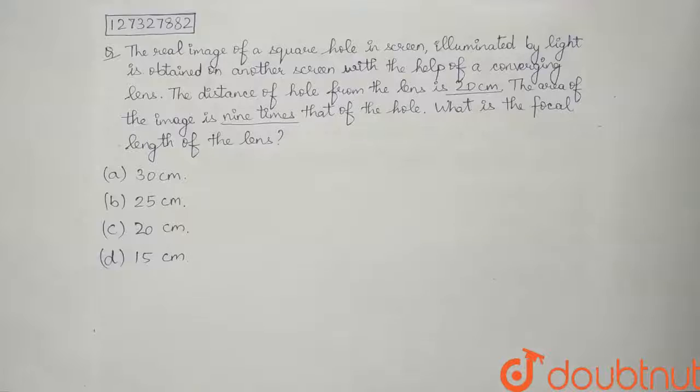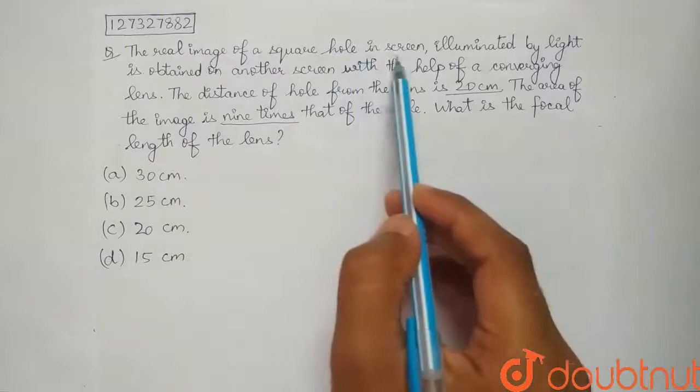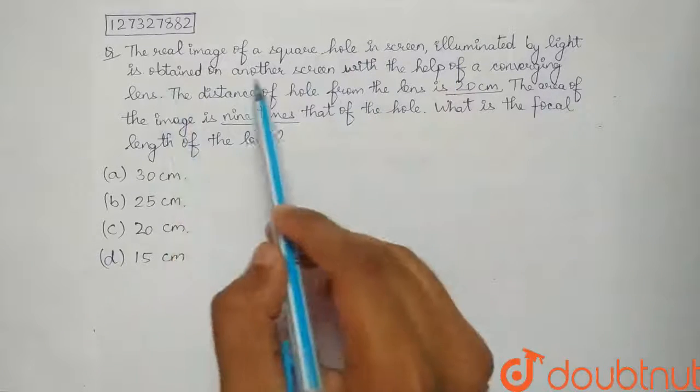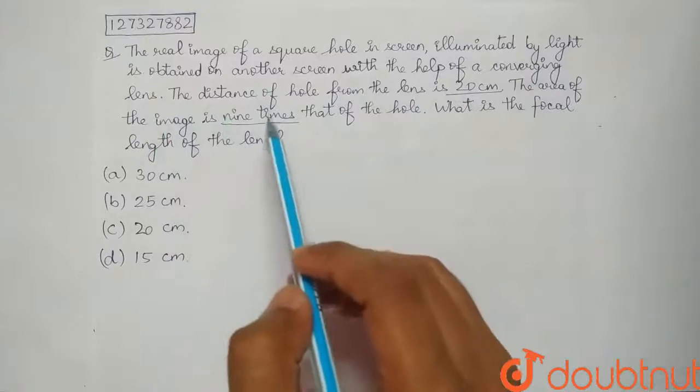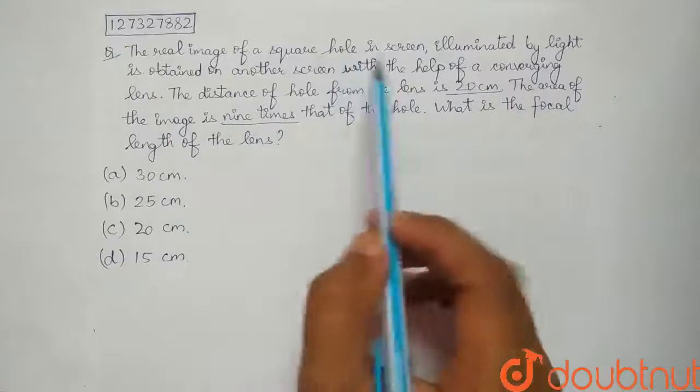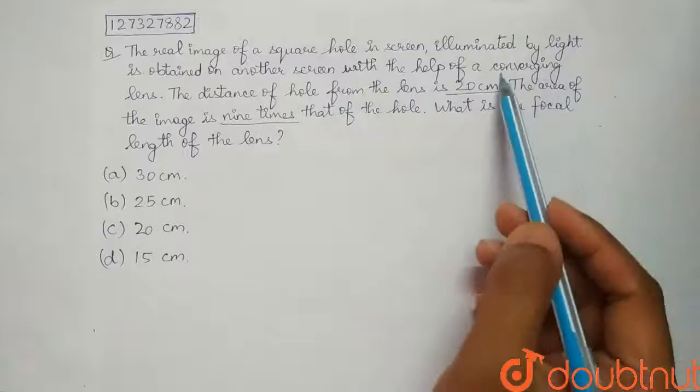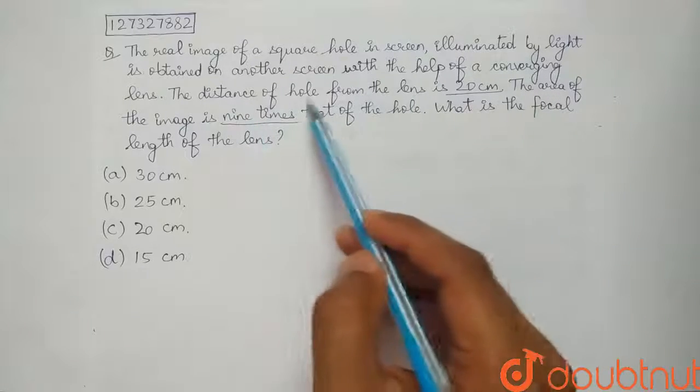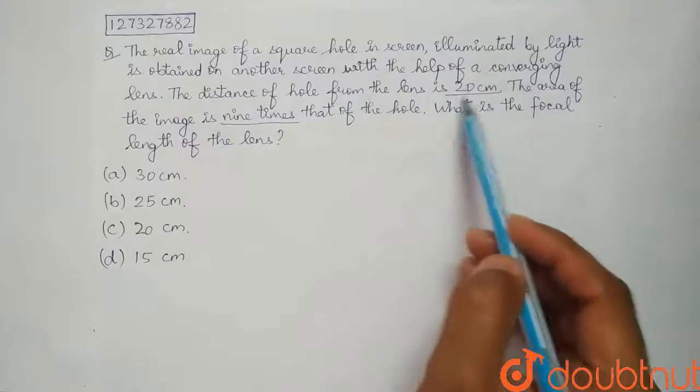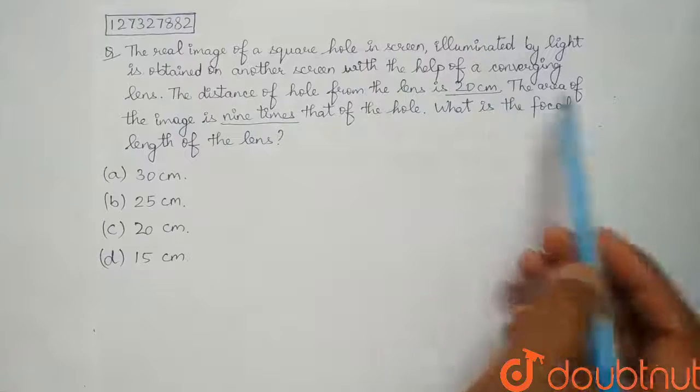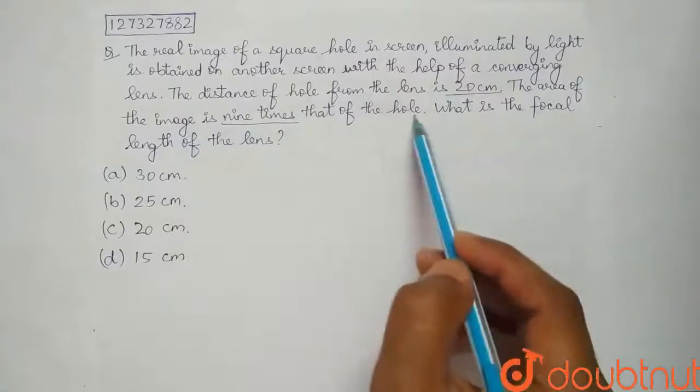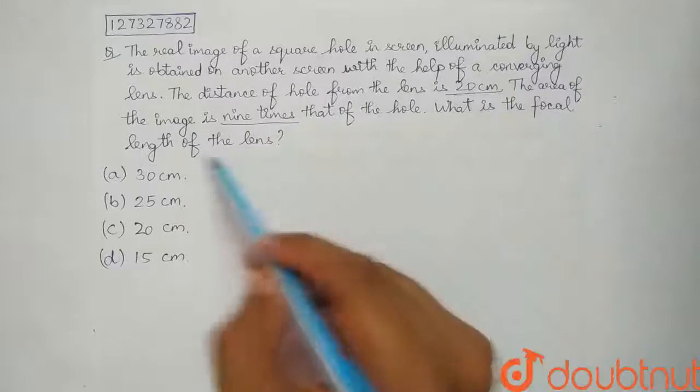Hello friends, today's question is: the real image of a square hole in a screen illuminated by light is obtained on another screen with the help of a converging lens. The distance of hole from the lens is 20 cm. The area of the image is 9 times that of the hole, 9 times important. What is the focal length of the lens?